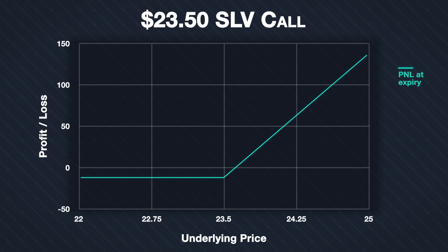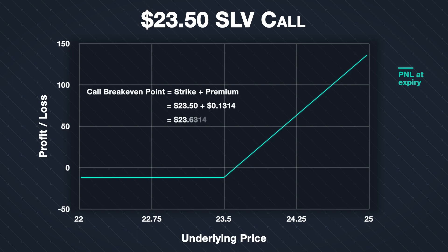From lecture 3.4, the formula for the breakeven point of a call option is: strike price plus premium paid. Using the total cost including fees — $0.1314 per share — the breakeven point is $23.50 + $0.1314 = $23.6314, or roughly $23.63. This is the point at which the profit or loss line crosses the x-axis.